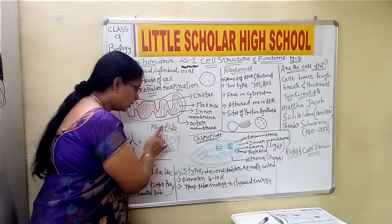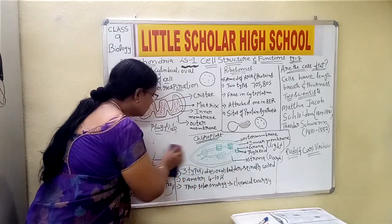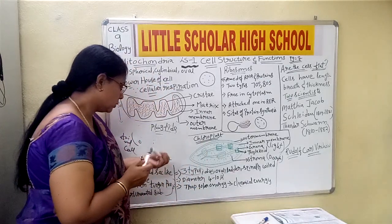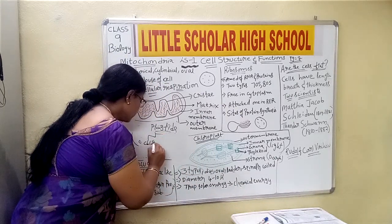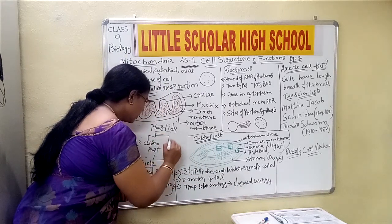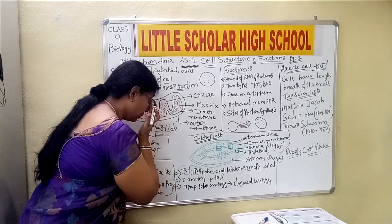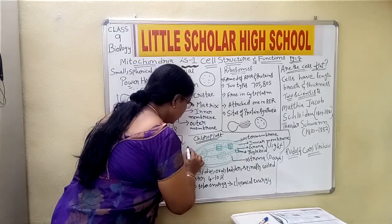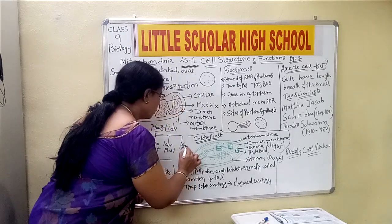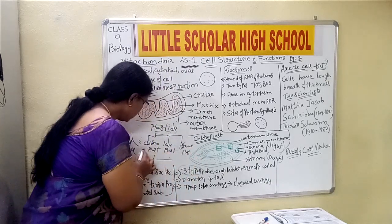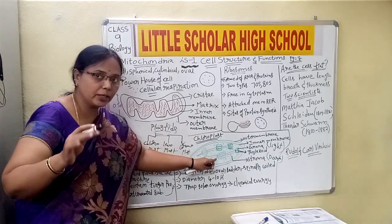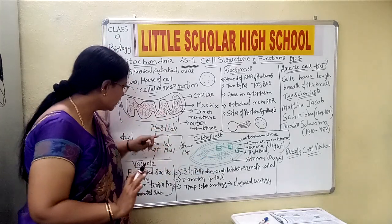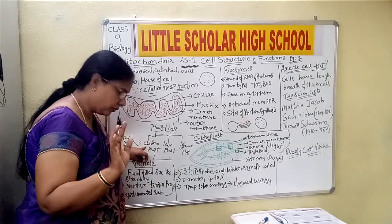Under the plastids, we have chloroplast, chromoplast, and leucoplast. Chloroplasts are the ones which have green pigment. All the leaves which appear green in color are made up of chloroplasts because of the green pigment chlorophyll, so we refer to them as chloroplasts.